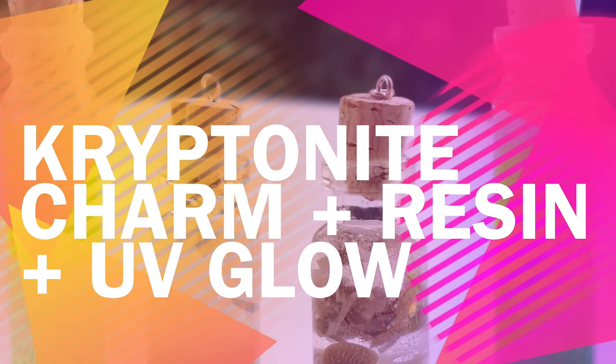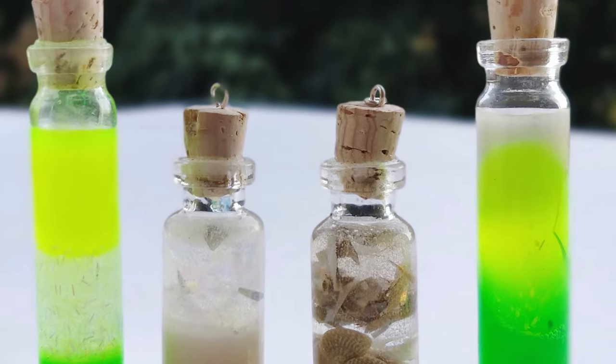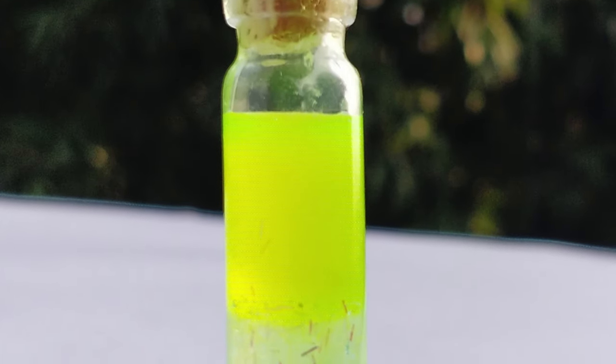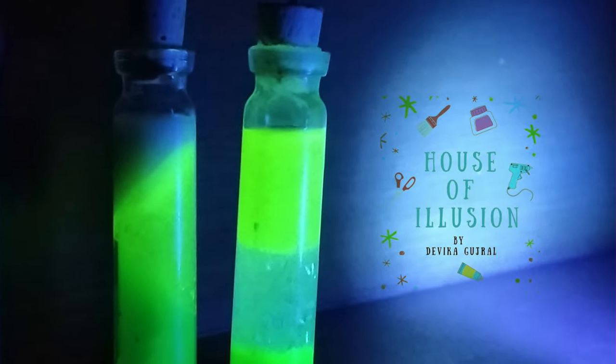Namaste crafters, welcome back. Today's video is a magical one covering our magical kryptonite resin charm. I have made two versions which are more or less similar. The powders that I have used in the vials glow in UV light, so put them under your UV light and it's all set to glow.